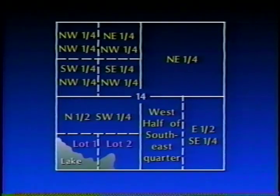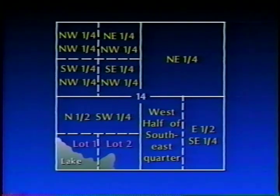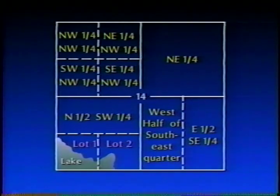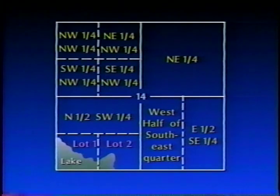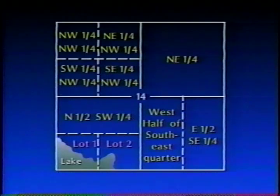Once the public lands were surveyed and the plats created and approved, a parcel of land could be described with certainty. Section 14 will be used to illustrate the nomenclature used to describe an aliquot part or legal subdivision of a section. The parcel at the top left of the section is described as the northwest one-quarter, northwest one-quarter of section 14. Immediately below is the southwest one-quarter, northwest one-quarter of section 14, and below that the north one-half, southwest one-quarter of section 14. Locating aliquot part descriptions is often easier if read backwards. In this illustration, section 14 is made fractional by a lake, and two non-aliquot parts of a section were created, described as Lot 1 and Lot 2 of section 14.